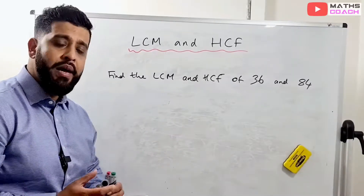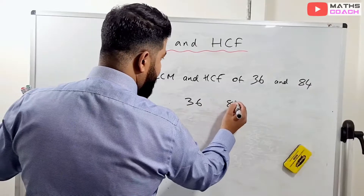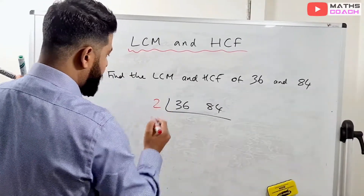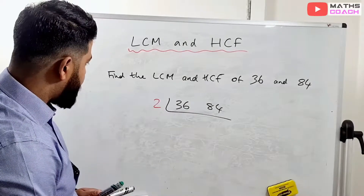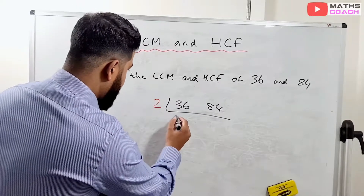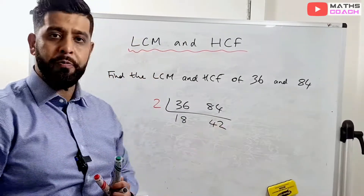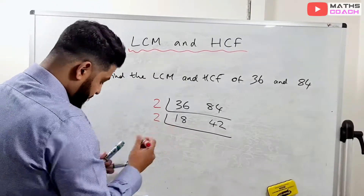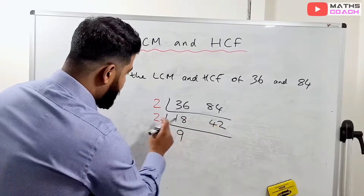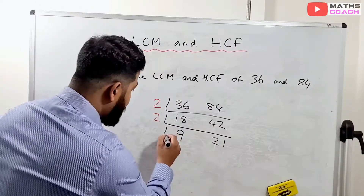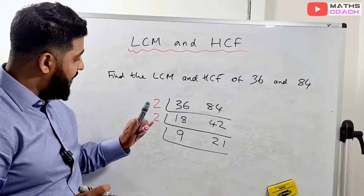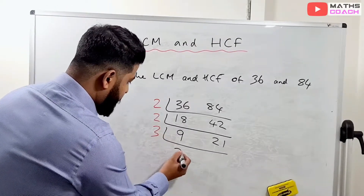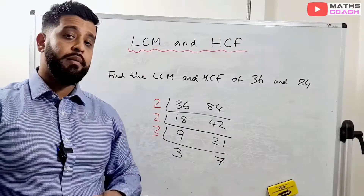Let's look at a second example: find the LCM and HCF of 36 and 84. Just like before, we write them with a dividing line. We divide by 2, since 2 goes into both: 36 ÷ 2 = 18 and 84 ÷ 2 = 42. We divide by 2 again: 18 ÷ 2 = 9 and 42 ÷ 2 = 21. The next prime that divides into both 9 and 21 is 3: 9 ÷ 3 = 3 and 21 ÷ 3 = 7. Both results are prime numbers, so we stop.